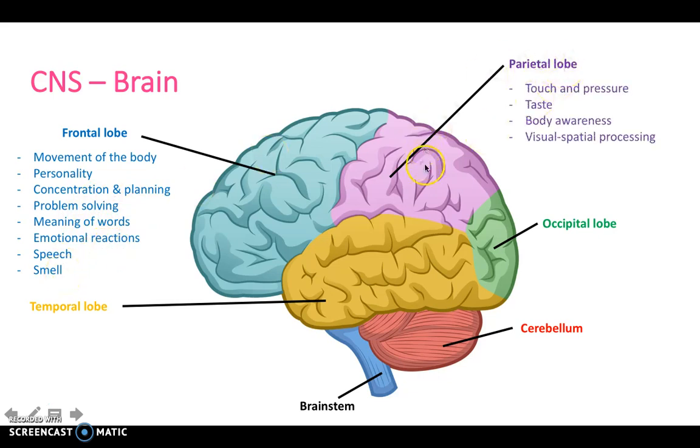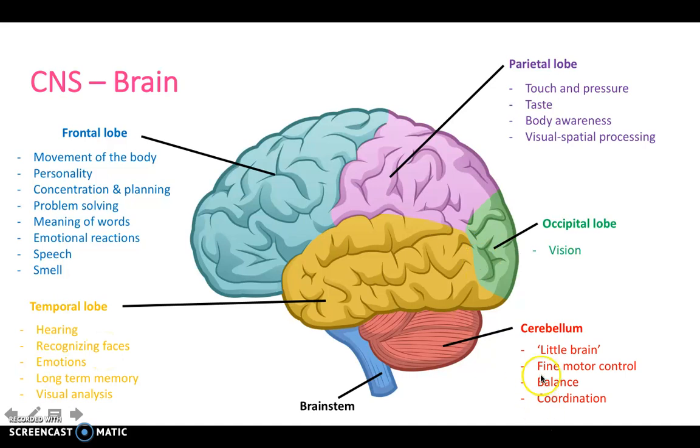The parietal lobe is all to do with touch and pressure, sensation, taste, body awareness, and visual-spatial processing. The occipital lobe is simply our visual cortex, and the temporal lobe is all to do with hearing, recognizing people, emotions, long-term memory, and visual analysis. The cerebellum at the back is responsible for fine motor control, balance, and coordination.